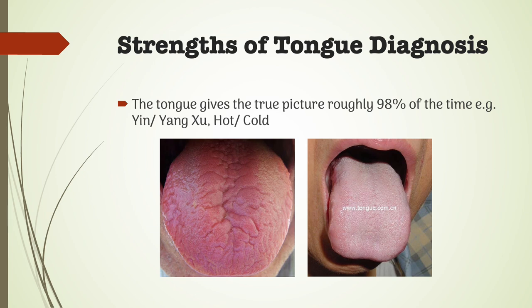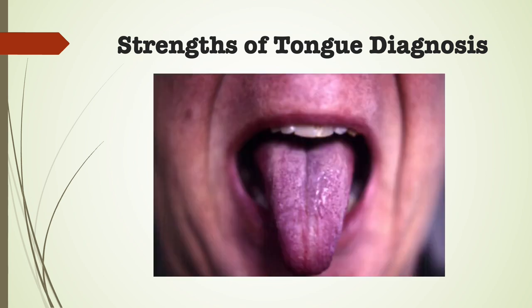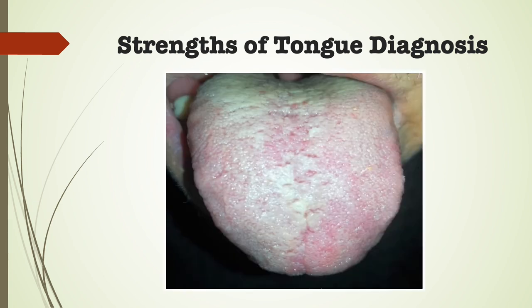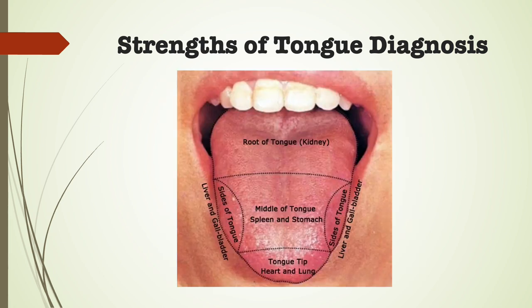The tongue gives the true picture roughly 98% of the time — for example, yin or yang deficiency, hot or cold. Strengths of tongue diagnosis: the progress or lack of progress of the disease can be monitored. For example, a purple body color is expected to become less purple; a tongue without coating is expected to develop a coating; thick coating is expected to become thinner. It is easier than pulse diagnosis and also more objective. Tongue diagnosis is an important tool of diagnosis.